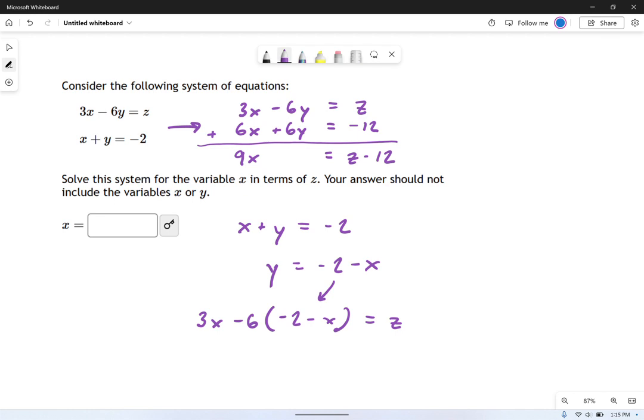And then we just distribute the minus 6, and I get 3x, let's see, plus 12 plus 6x equals z. And the result of that is 9x plus 12 equals z.